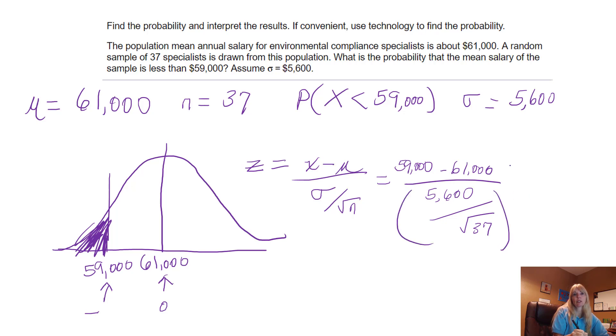Now, be sure students sometimes don't do that bottom first. So I actually did some steps. So I get negative $2,000 up top. Should be negative, right? $59,000 is smaller. And then on the bottom, I actually got 920.6343. And throwing that in the calculator, I get negative, which we said we should, -2.17.